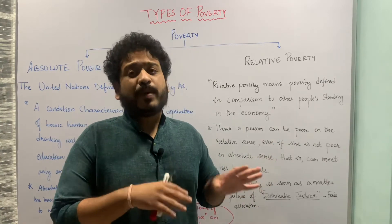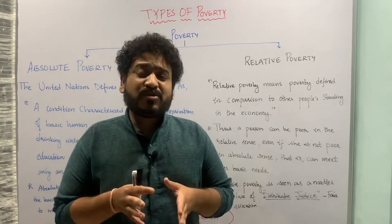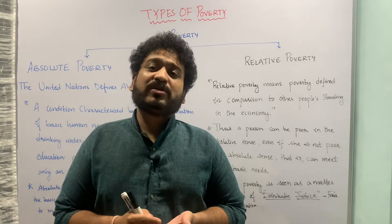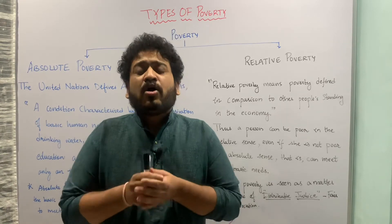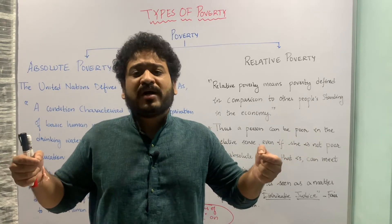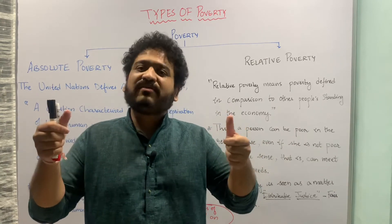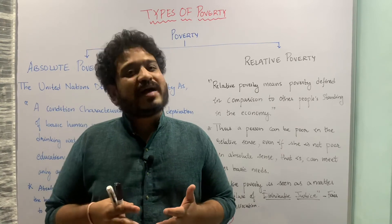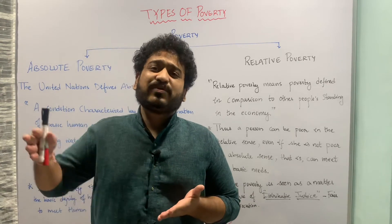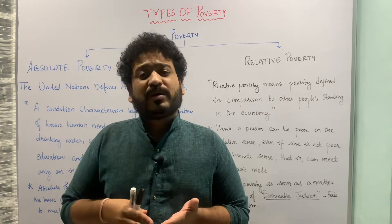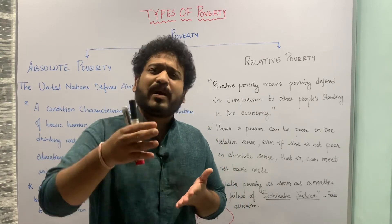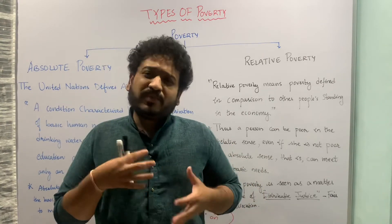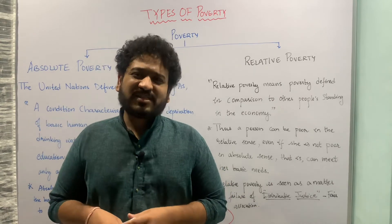In the next class we will be talking about the poverty line — on what basis you decide whether a person is poor or not. This is defined at both the global level and the national level. In India, for example, there are certain committees constituted by the Government of India that have given different poverty lines, such as the Tendulkar Committee and the Rangarajan Committee. We will cover all of that in the upcoming lecture, so please stay tuned. Thank you.